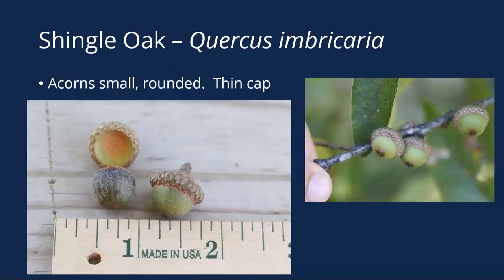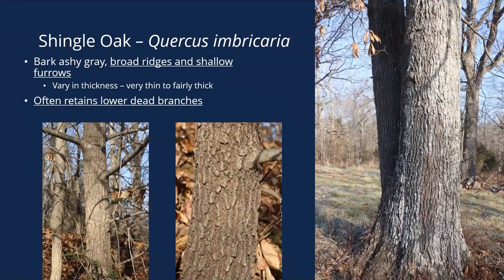Like many of our red oaks, the acorns are small and rounded with a thin cap — acorns are often not an easy way to tell the red oaks apart. Shingle oak bark varies a little bit and can be somewhat thin or fairly thick with some shallow furrows. It often retains its dead lower branches more so than a lot of other oaks. That real poor form where it's never a tall clear tree, and often holding onto leaves in winter, makes it easy to identify.